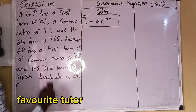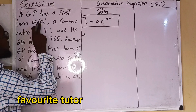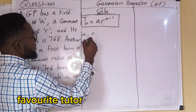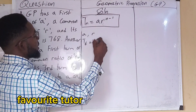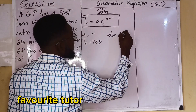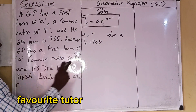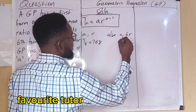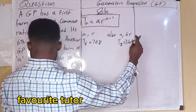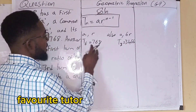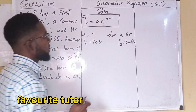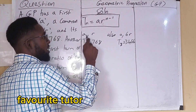We are told that the first GP has a first term A and common ratio R, and the sixth term is equal to 768. Another GP has a first term of A and a common ratio of 6R, and its third term is 3456. A is the first term, R is the common ratio. We are looking for A and R.